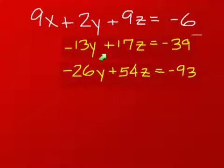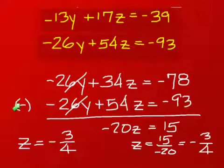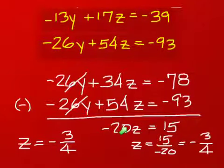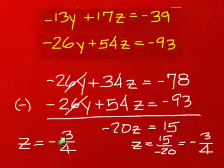Now you must get rid of this position here. You'll use these two equations, so you just have to multiply this one by 2. When you do that, you're left with this. Since you have two negative 26s, you'll subtract — it eliminates them. This minus this is negative 20z, and this minus this is positive 15. You'll notice that we come out with an answer of negative 3 fourths.